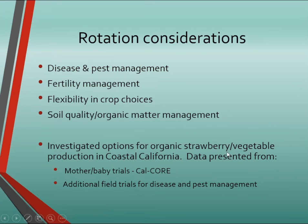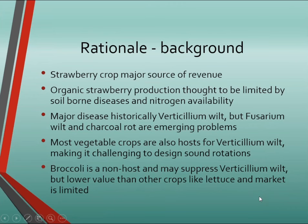We'll also consider soil quality and organic matter management. The background for strawberry and vegetable production in coastal California is that the strawberry crop is by far the major source of revenue, so there's interest in growing strawberries fairly often. Many organic farmers go five years between strawberry crops, which can be challenging economically. There's interest in whether other disease management approaches might allow shortening that rotation.